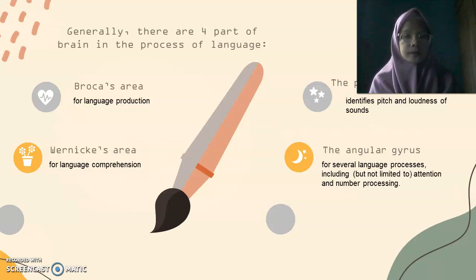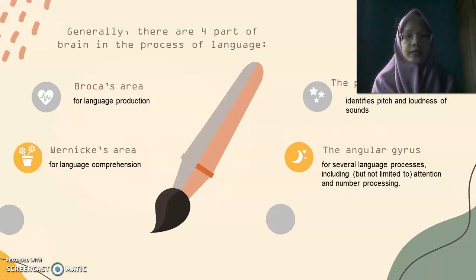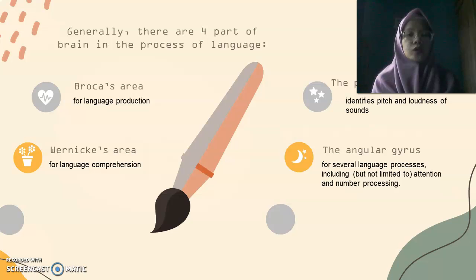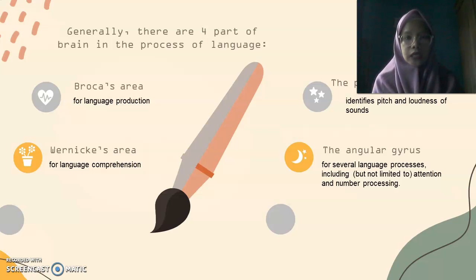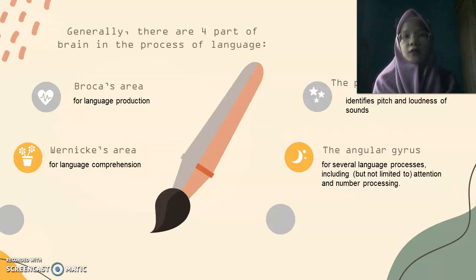So what is aphasia? Aphasia is a loss of the ability to produce or comprehend language. When something goes wrong with Broca's area, usually that patient cannot speak fluently, but they can still understand the language — they just cannot speak fluently. That's Broca's area.